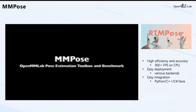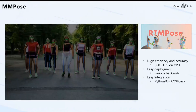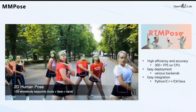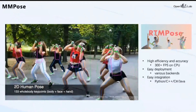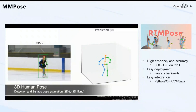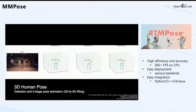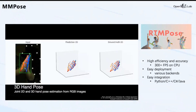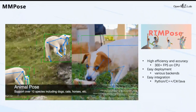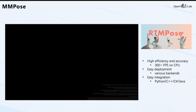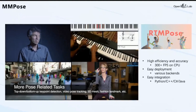MMPose is a pose estimation toolbox. It contains a rich set of algorithms for 2D multi-person pose estimation, hand pose estimation, face landmark detection, whole-body human pose estimation, fashion landmark detection, and animal pose estimation. We also developed RTMPose, a real-time multi-person pose estimation algorithm based on MMPose. It is lightweight enough to run on CPUs, GPUs, and mobile devices, achieving more than 300 FPS on a Core i7 CPU. It is also easy to deploy, supporting various backends like ONNX, TensorRT, etc.